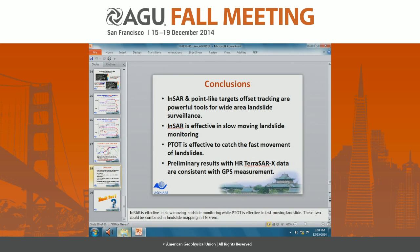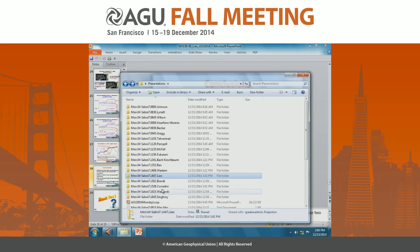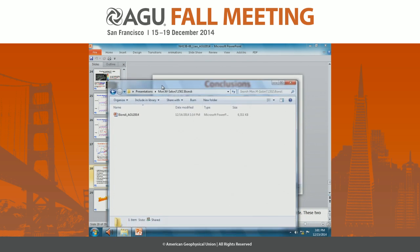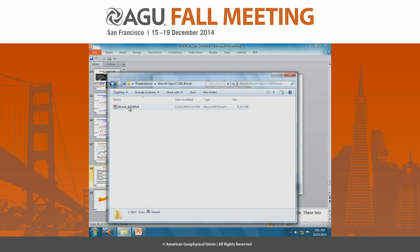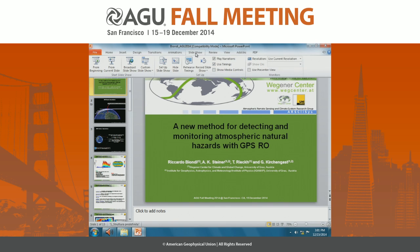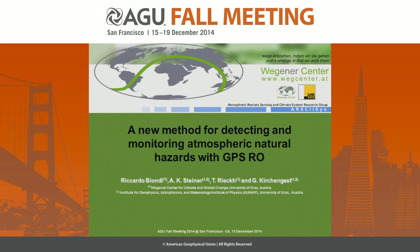Question: As far as I know, offset tracking is usually good for smooth surfaces like ice flow. For this kind of rugged topography, is there any limitation for offset tracking? Answer: The key point may be identifying the point-like target. We use corner reflectors here, which allows us to improve the accuracy.